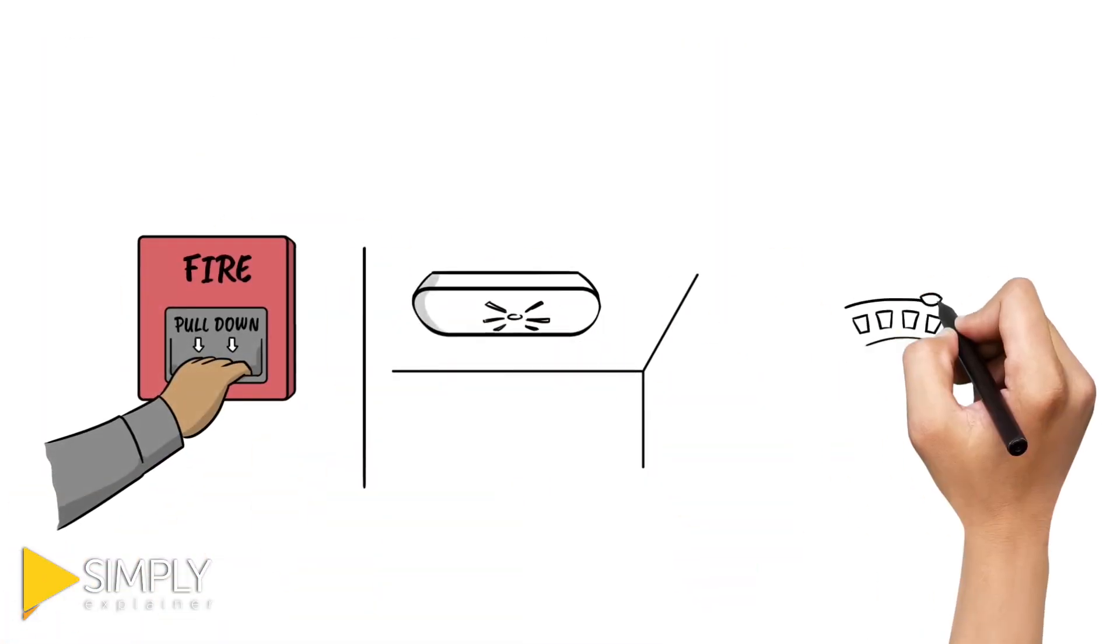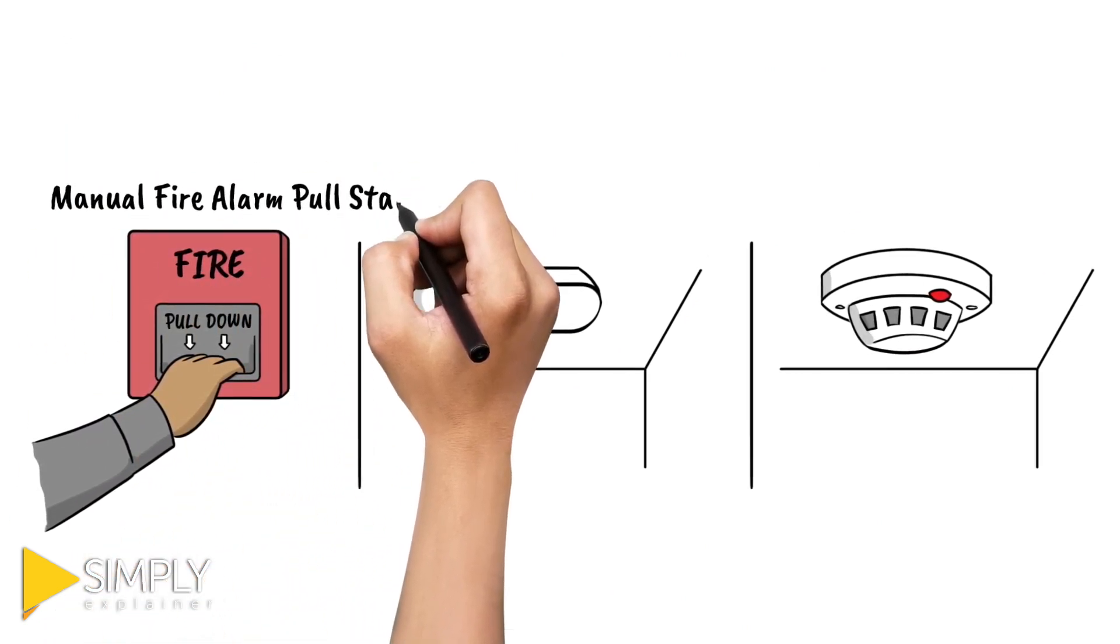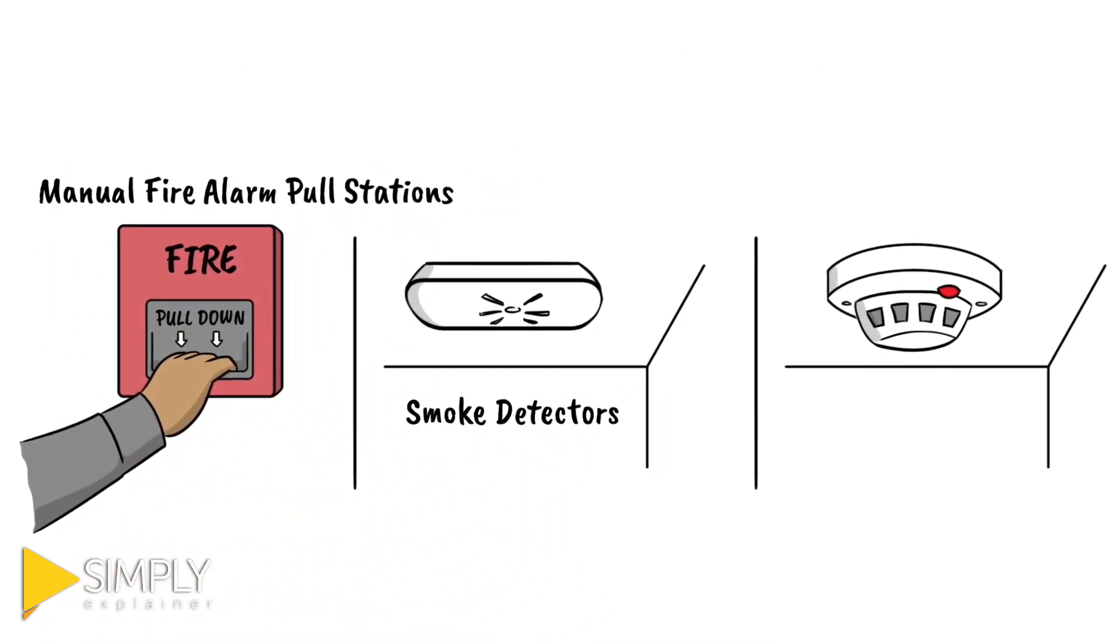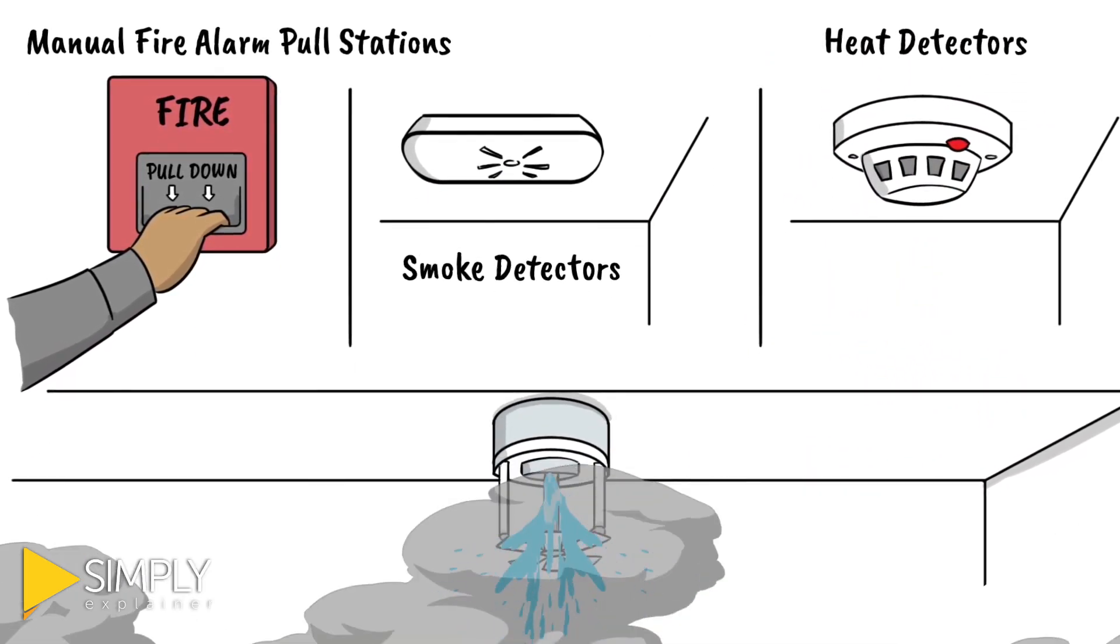The alarm can be activated by several devices. One, manual fire alarm pull stations. Two, smoke detectors. Three, heat detectors. Four, automatic fire sprinklers.